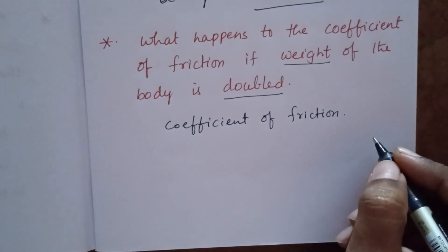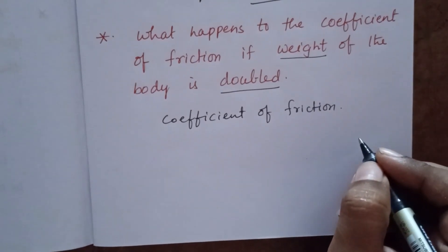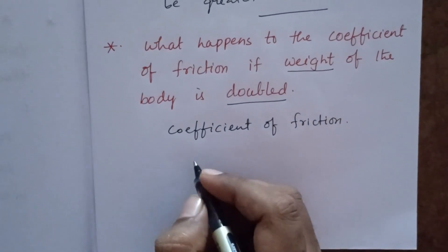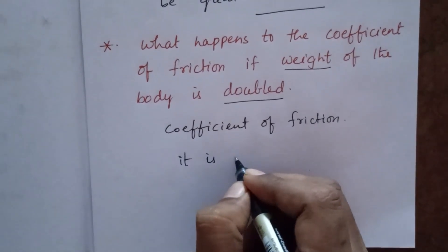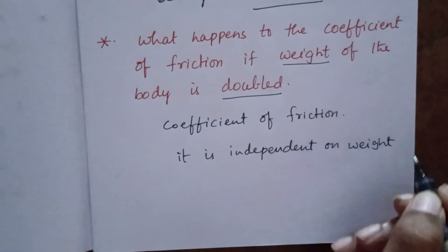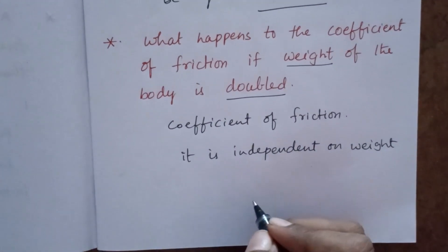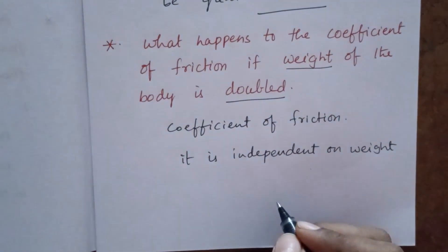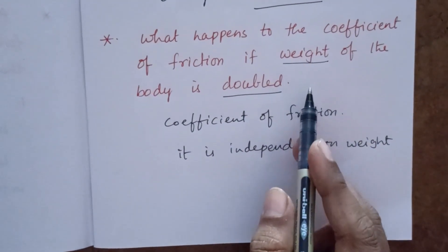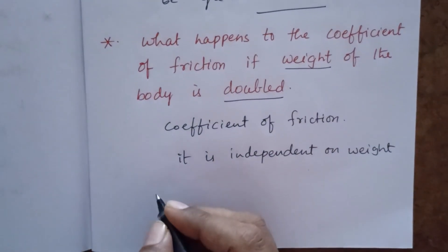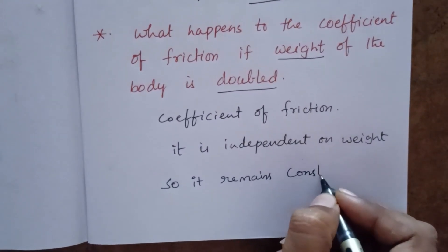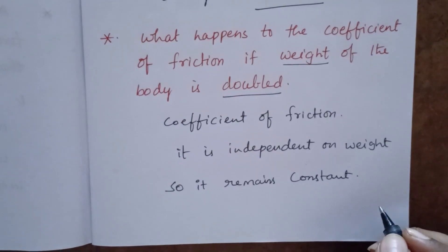The coefficient of friction is a constant between two surfaces. It is independent of the weight of the body. So when the weight is increased, the coefficient of friction will not change — it remains constant. Therefore, the coefficient of friction does not change when the weight of the body is doubled.